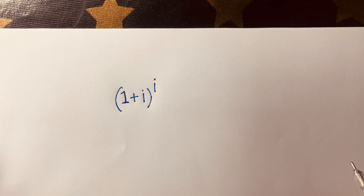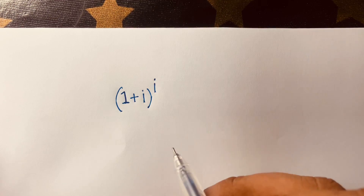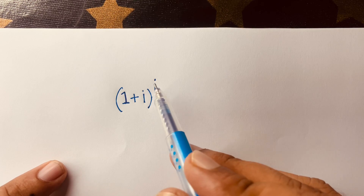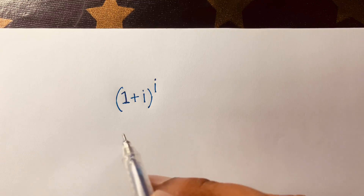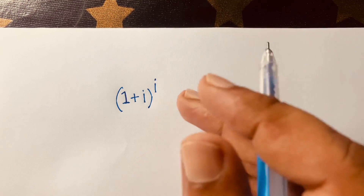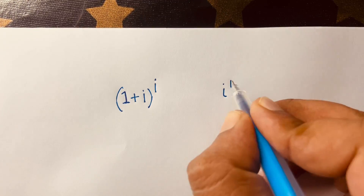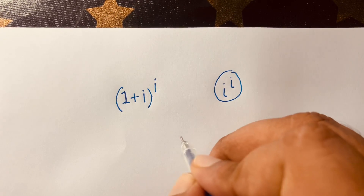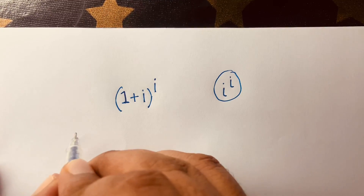In this video we solve the interesting math problem (1+i) to the power i. Here i is a complex number and it is also an exponential equation. The question is: is (1+i)^i a real number? We know that i^i is a real number, so (1+i)^i should also be a real number. Let's solve this.